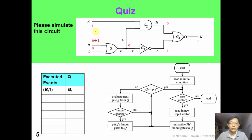Now it's time for you to work on this quiz. Suppose in the first cycle the values of A, B, C are 1, 1, and 0. The logic values in the first cycle have been denoted in this picture. Now, given a primary input change at B, please finish this event-driven simulation using this flowchart. Please pause the video and work on this quiz.